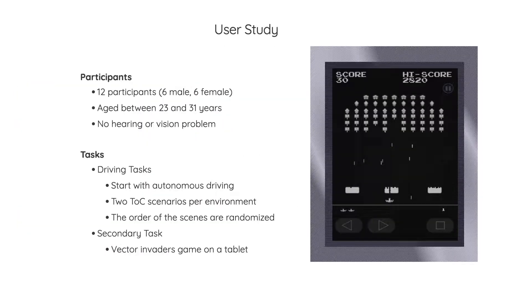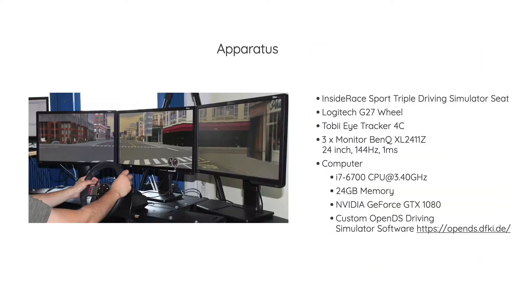Overall in the main study we had 12 participants — 6 male and 6 female — aged between 23 and 31 years, without hearing or vision problems. The task always started with autonomous driving, with 2 takeover of control scenarios per environment, and the order of scenes was randomized. The secondary task was a tablet game called Vector Invaders on Android.